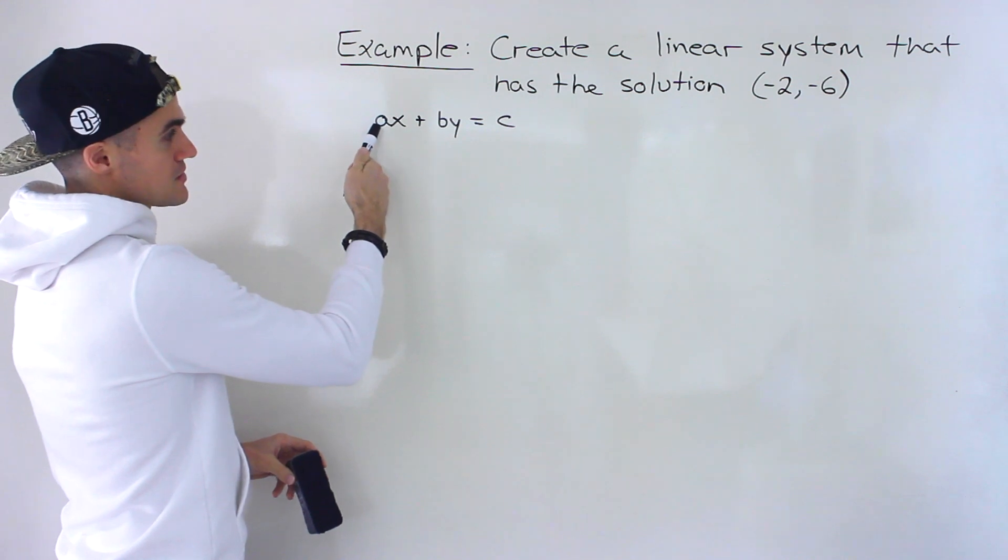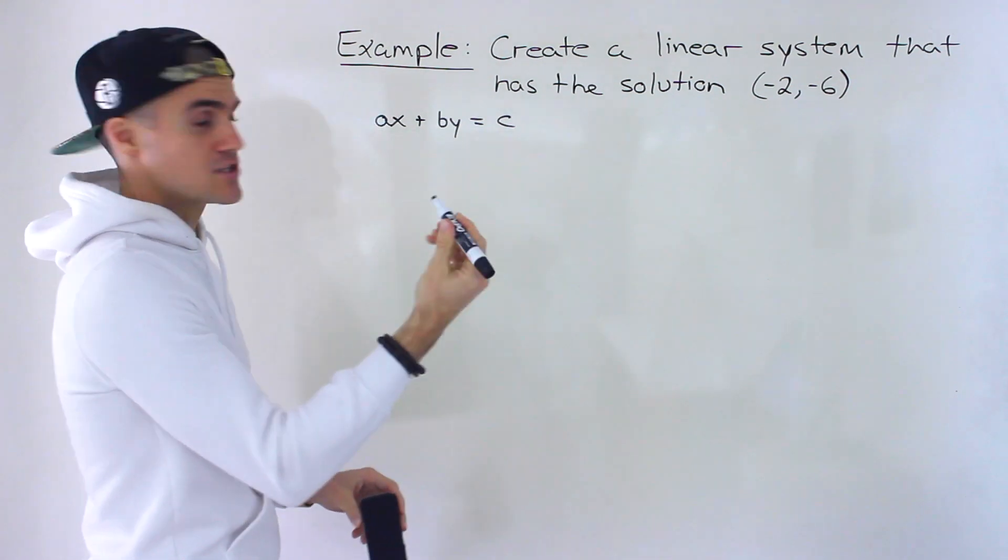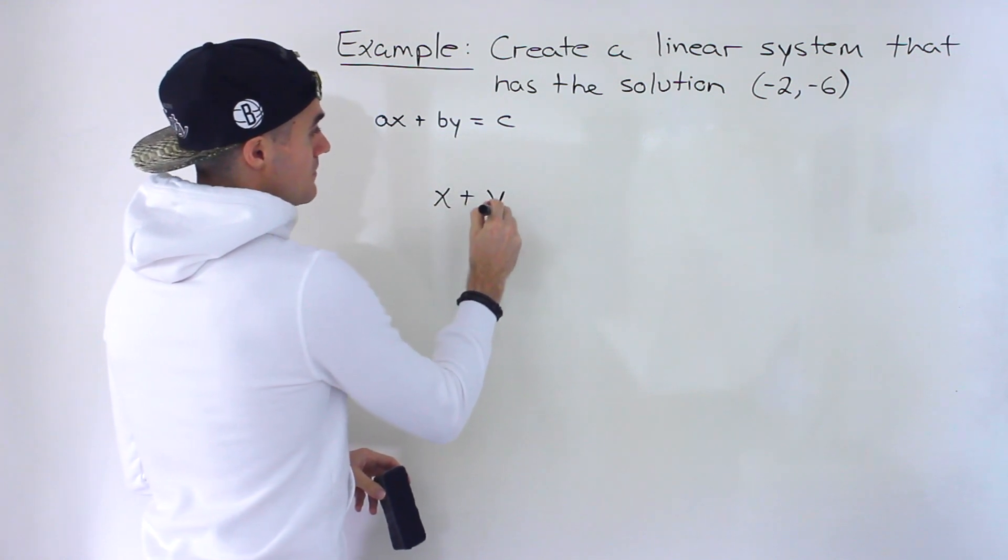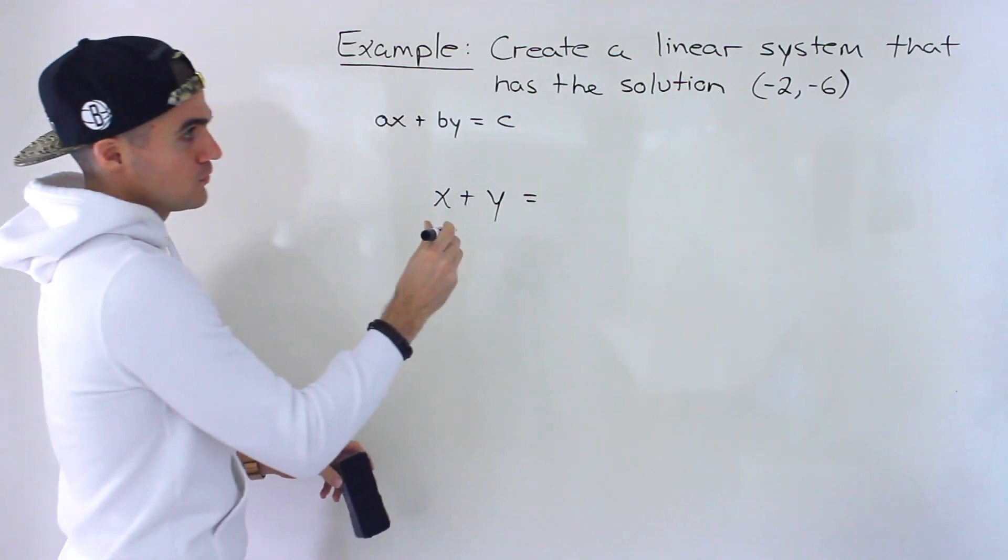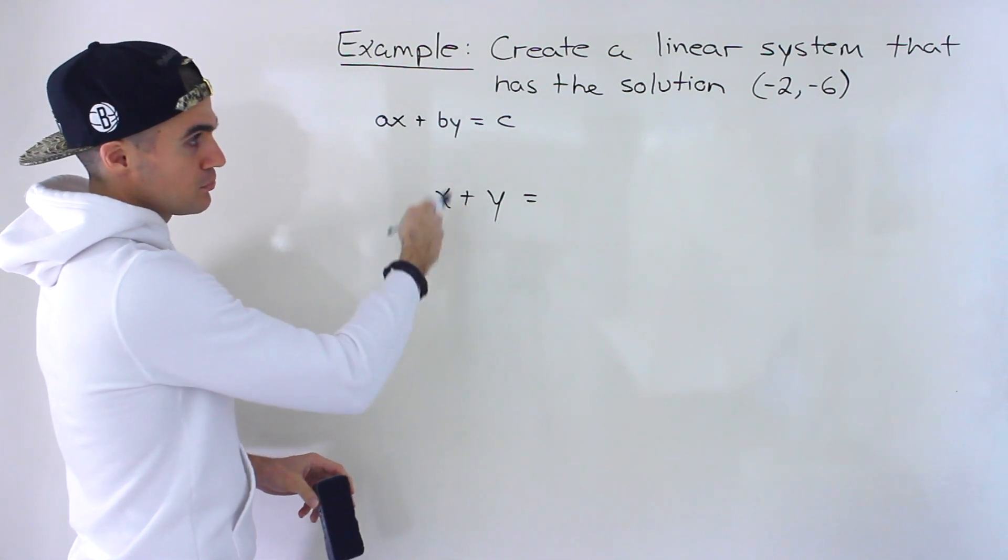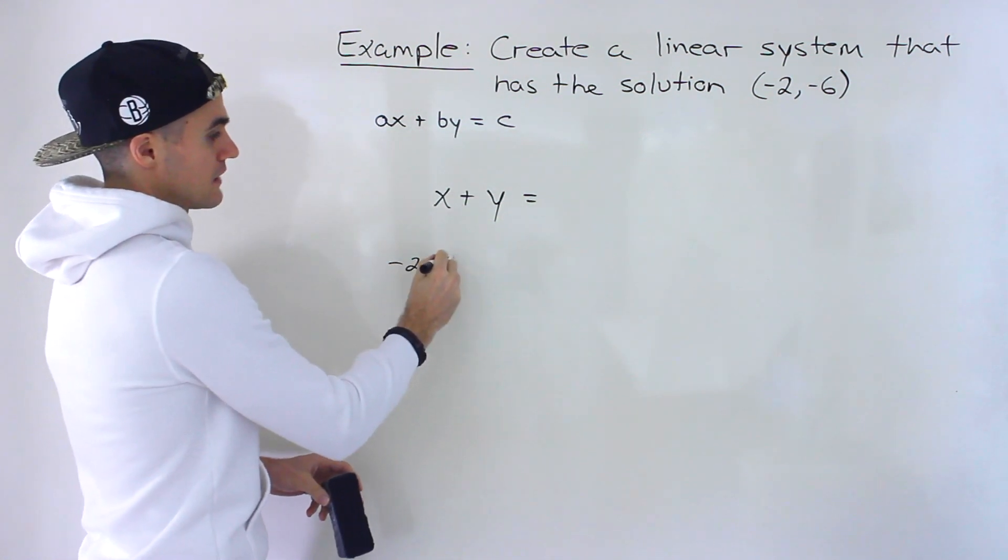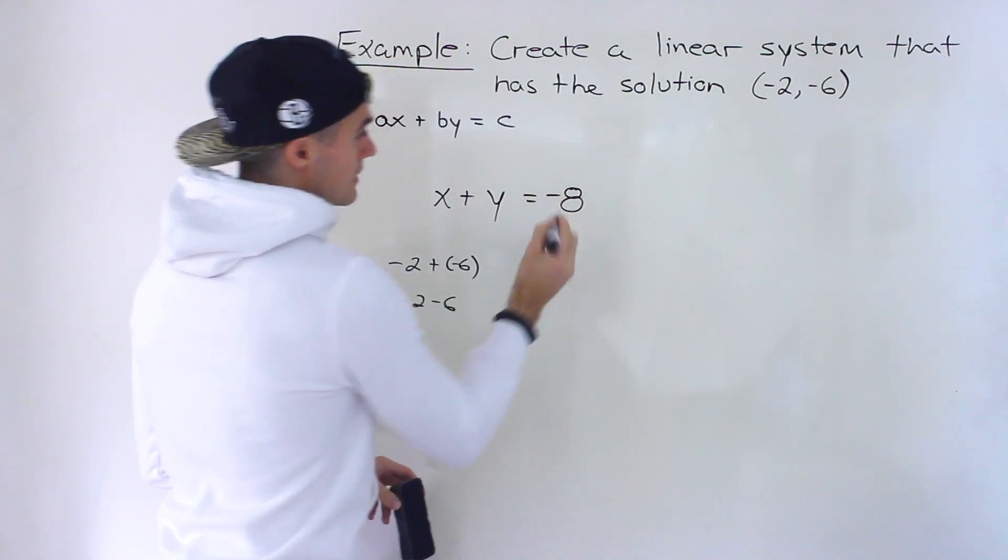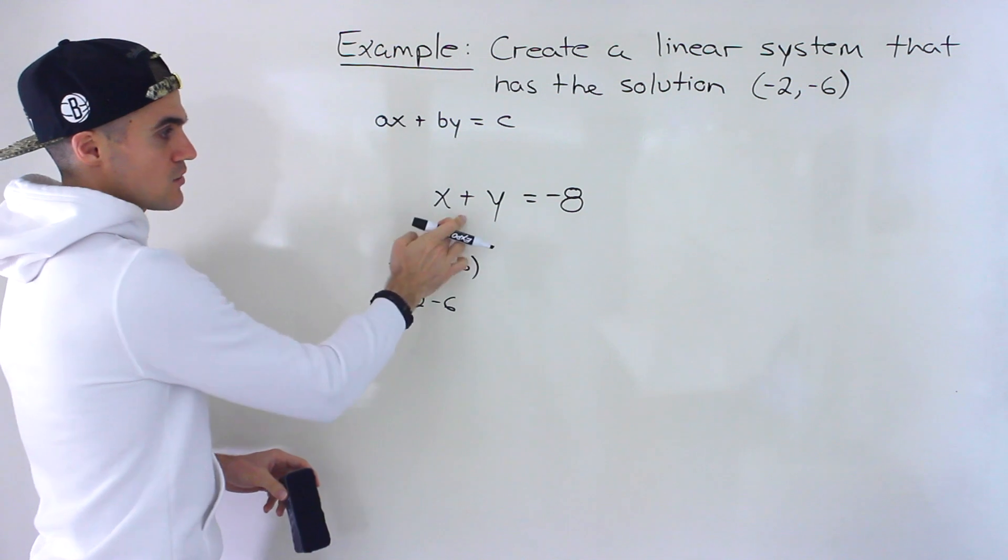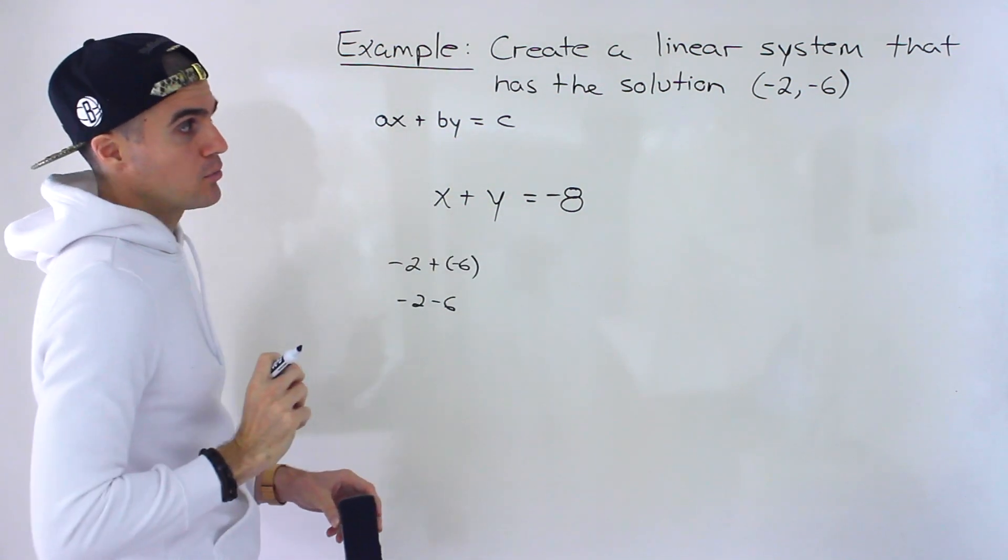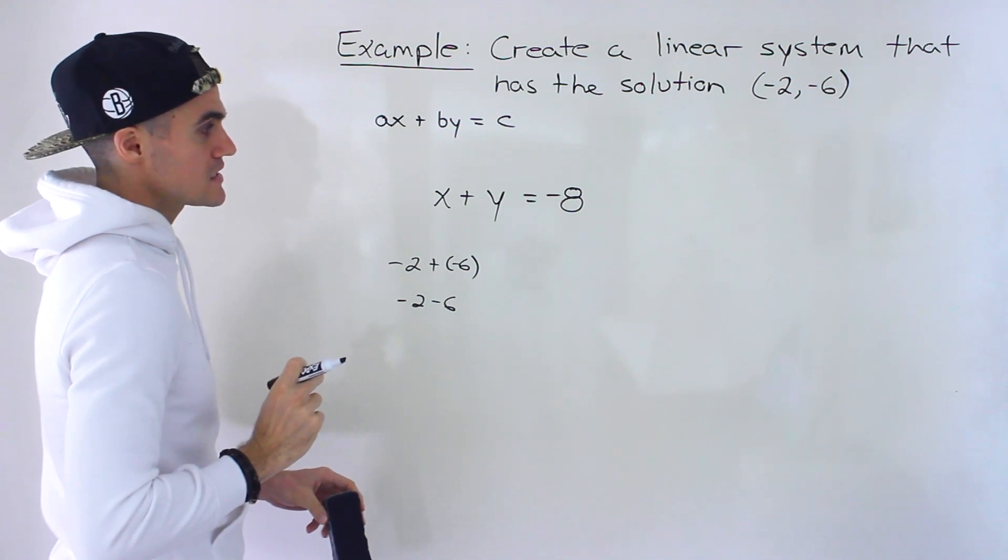And a very easy one to start is if the a and the b is just 1. So we can say x plus y, and then all you want to do is just plug in the x and the y. So we have negative 2 plus negative 6, which would be like negative 2 minus 6, which would give us negative 8. So that's a line right there that contains that point negative 2, negative 6.